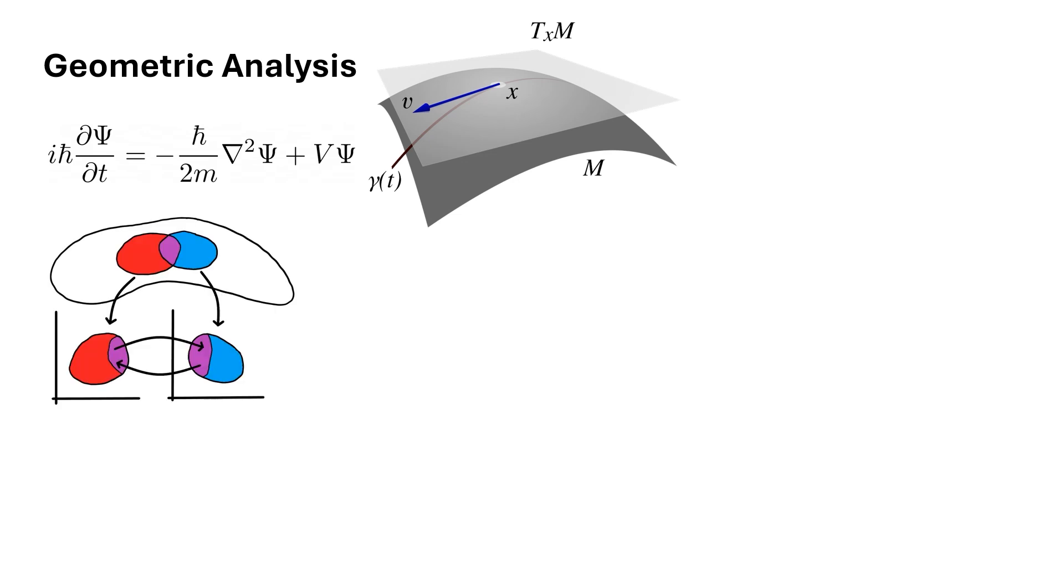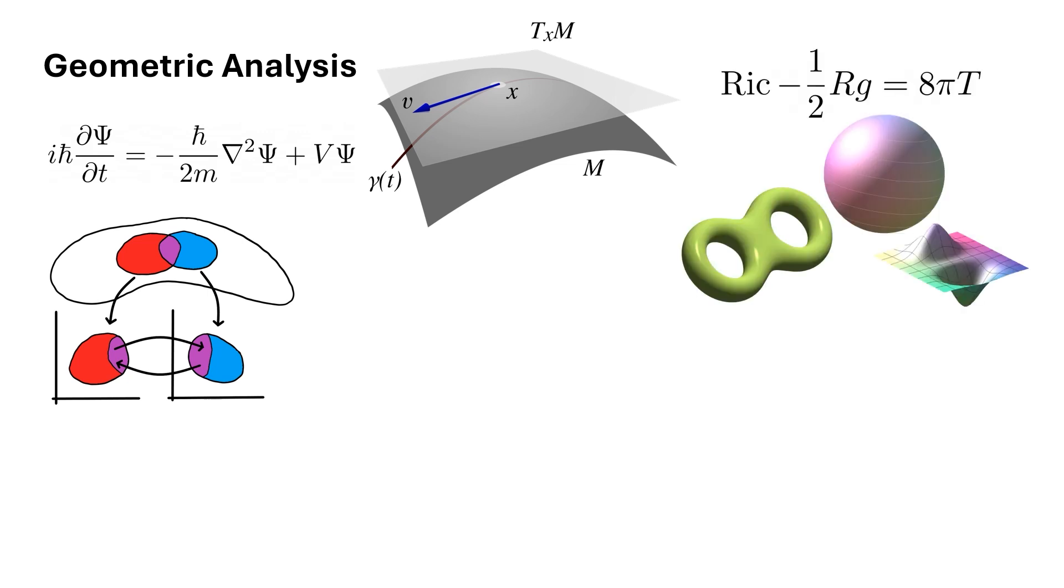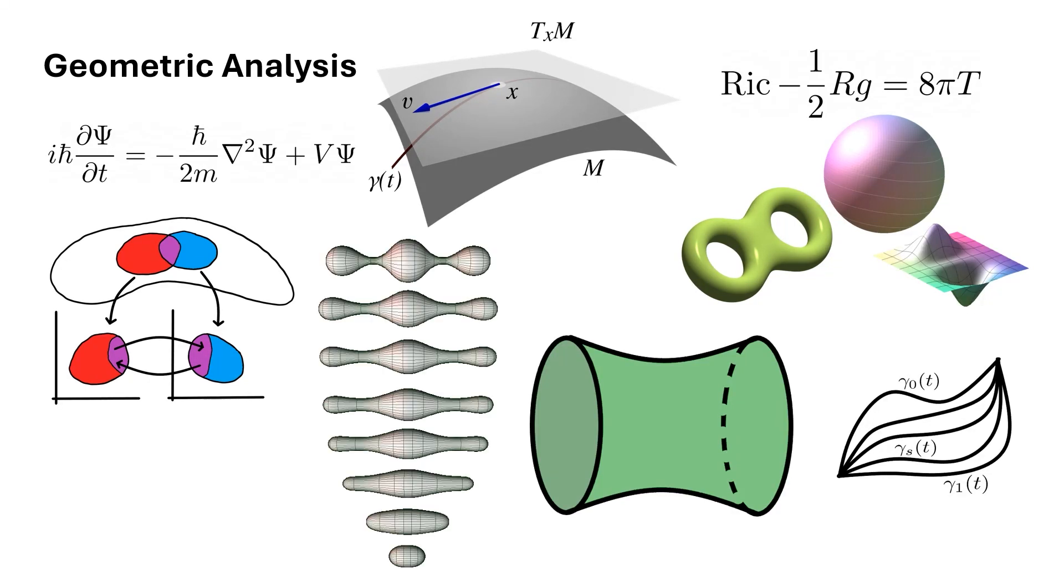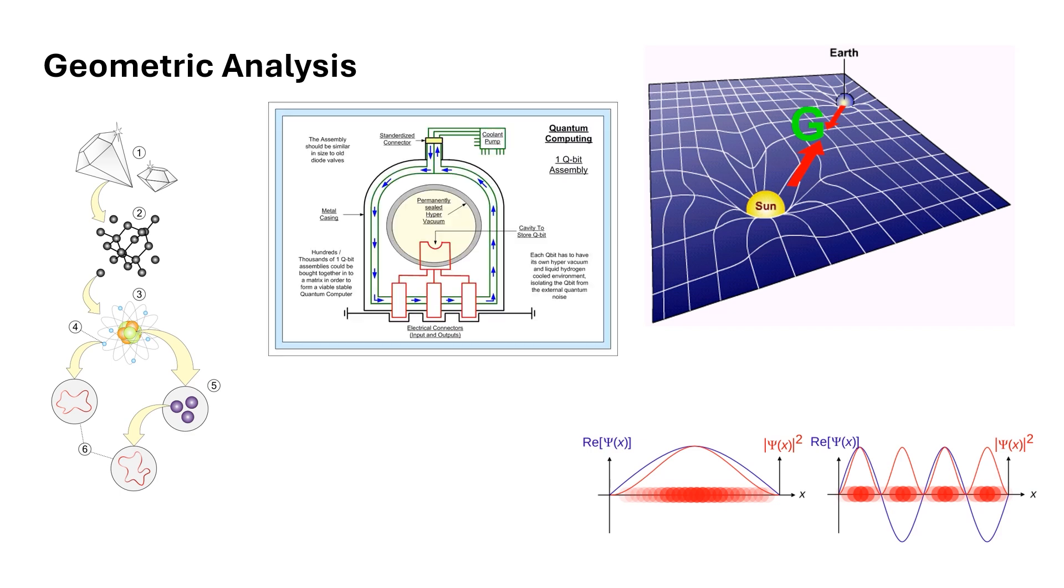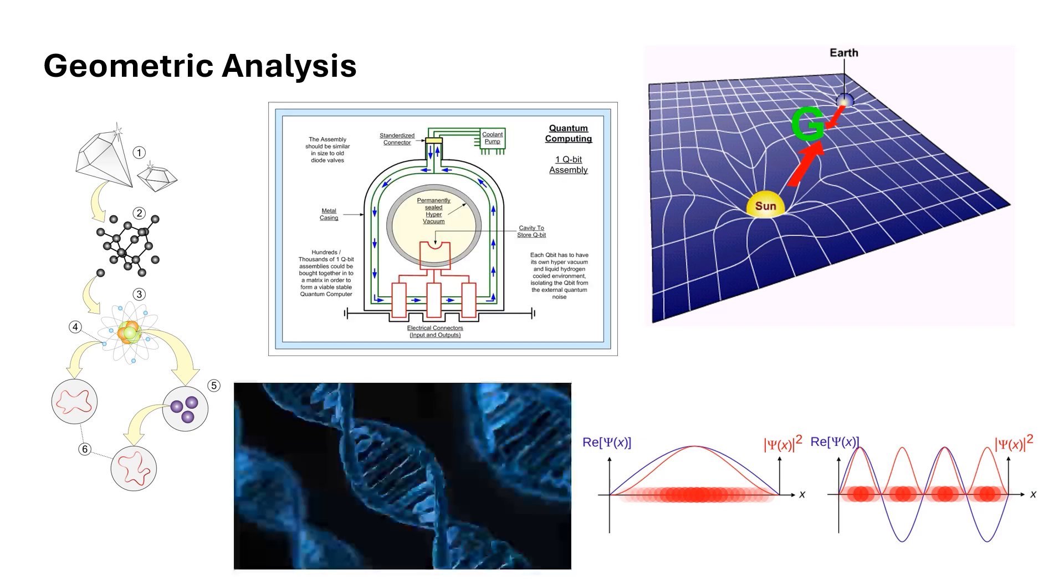Geometric analysis. Geometric analysis is the application of the study of differential equations to differential geometry and differential topology. This includes using geometrical methods to study and solve partial differential equations and using the theory of partial differential equations to solve problems in geometry. Moreover, it includes solving differential equations on manifolds as well as the calculus of variations. Important subtopics of geometric analysis include minimal surfaces and geometric flows. Geometric analysis has applications to general relativity, gauge theory, string theory, quantum mechanics, image processing, quantum computing, information geometry, mathematical biology, and more.